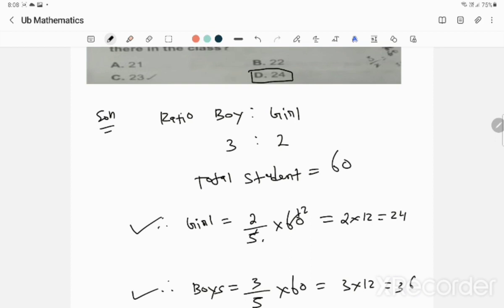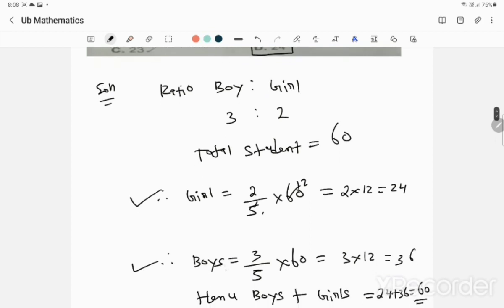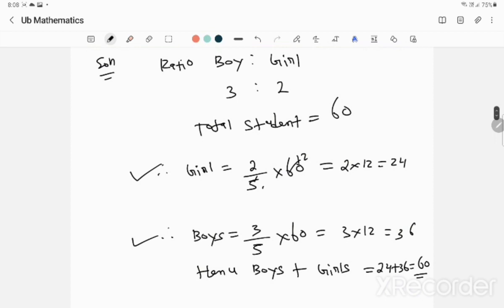2 times 12 is 24, so the number of girls is 24. In a similar way, if you want to find the number of boys, you will get 36. Total students is 60, so boys is 36 and girls is 24.